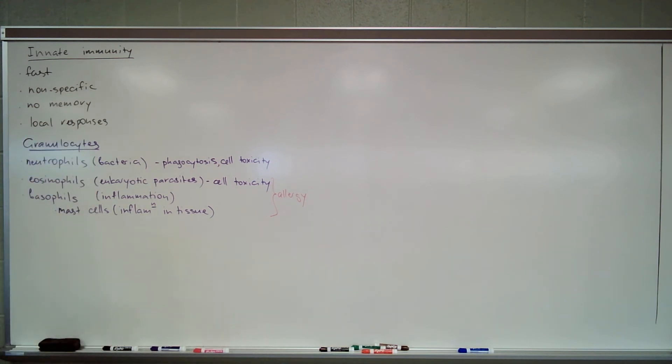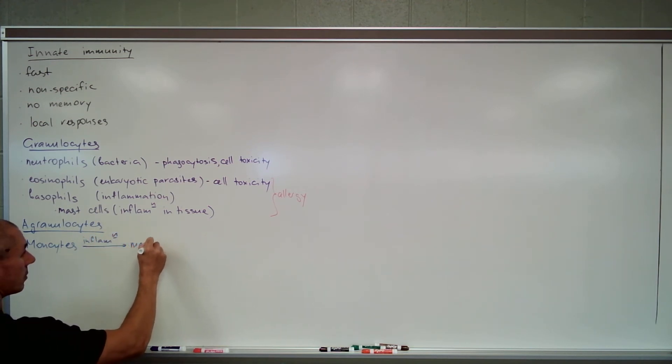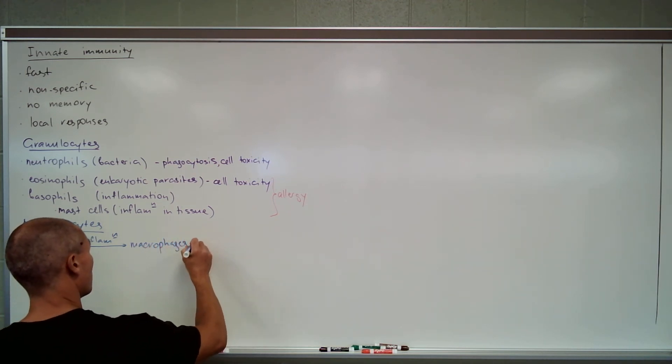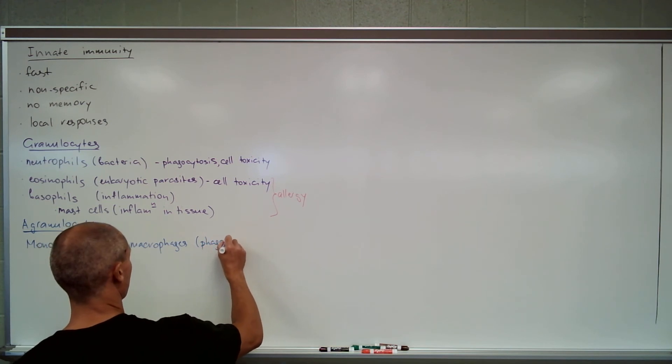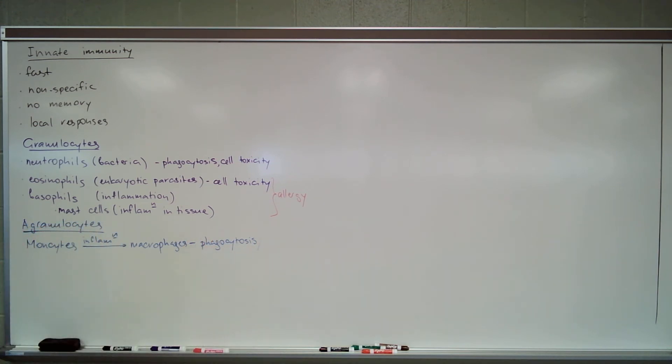Now then you have a set of cells that are called agranulocytes. The reason for it, they don't have cytoplasmic granules like granulocytes do. So there are two main types here. One type is monocytes. Now monocytes, when they are exposed to inflammatory stimuli, become macrophages. And macrophages are main phagocytic cells. They would phagocytose everything, and this is macrophages, not monocytes.